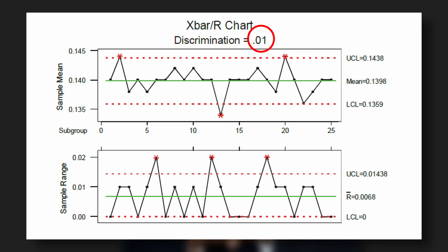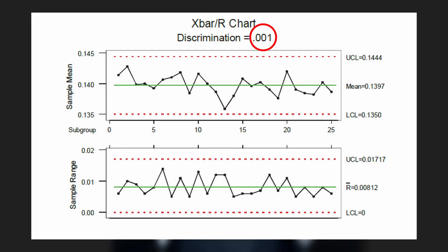Let's take an example. If you look at the graph, there was an instrument with a least count of 0.01 mm. On the range chart, you will find 3 points going out of the upper control limit. Now if you do the same test using a different instrument with a least count of 0.001 mm, all the points are within the control limit.